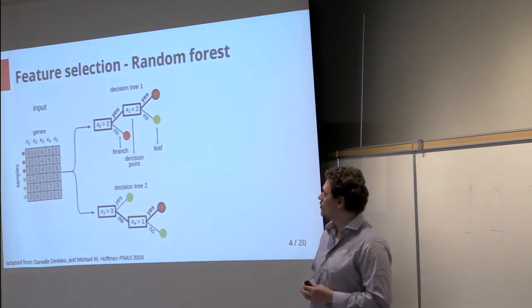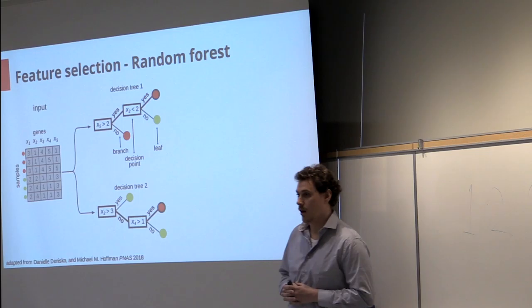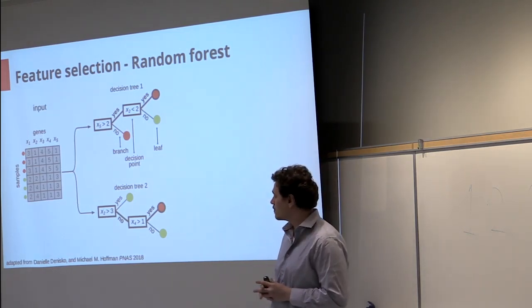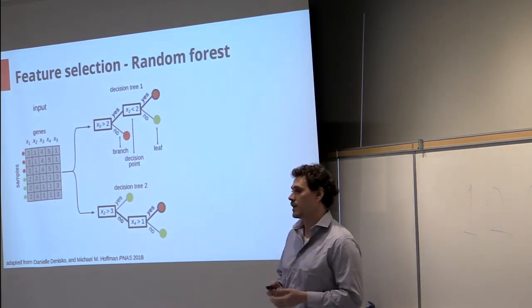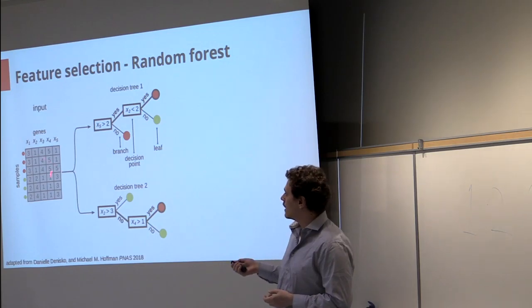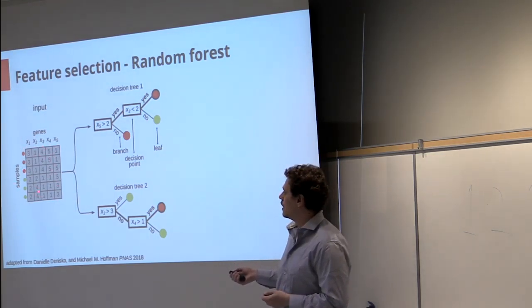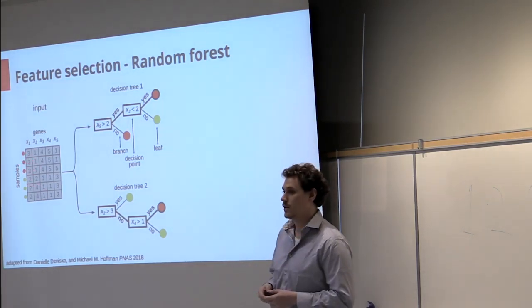So the method for feature selection is based on a random forest for binary classification. The input data is a gene expression matrix with samples from two different cell types shown in red and yellow here.